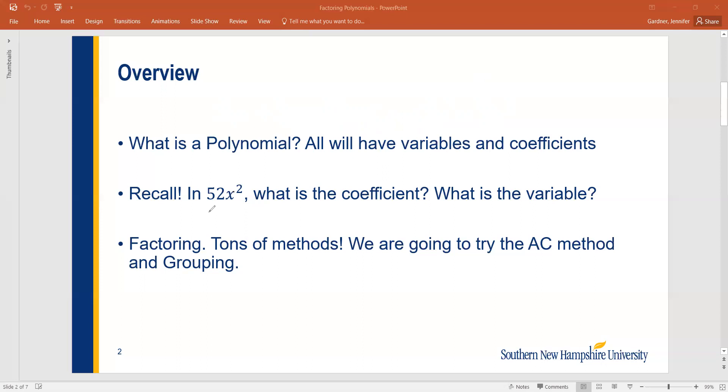So just remember, coefficient is the number that is in front of or being multiplied to the term. So in this case, if we recall, the 52 is the coefficient, whereas the variable is the x squared.